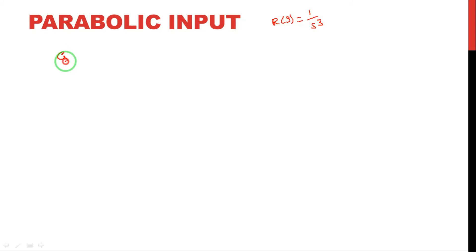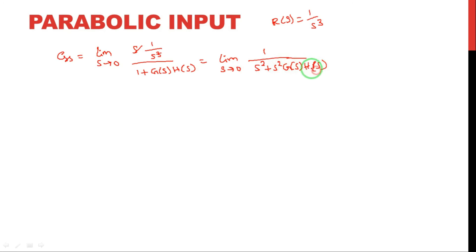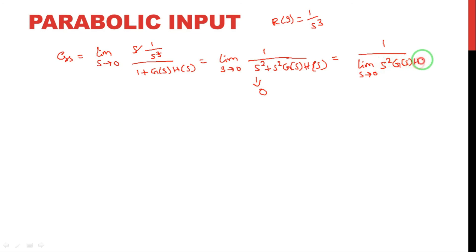For parabolic input, R(S) = 1/S³. ESS = limit S→0 of S×(1/S³) / [1 + G(S)H(S)], which after cancellation gives limit S→0 of 1 / [S² × G(S)H(S)]. The term limit S→0 of S²×G(S)H(S) is the acceleration error constant Ka. So ESS = 1/Ka.